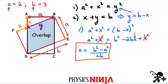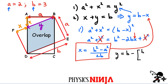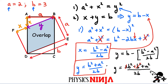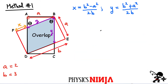Now we substitute x back to get an expression for y. We have y = b - (b² - a²)/2b. Putting things on a common denominator of 2b, this becomes (2b² - b² + a²) / 2b. The 2b² - b² simplifies to b², giving us our second important equation: y = (b² + a²) / 2b.